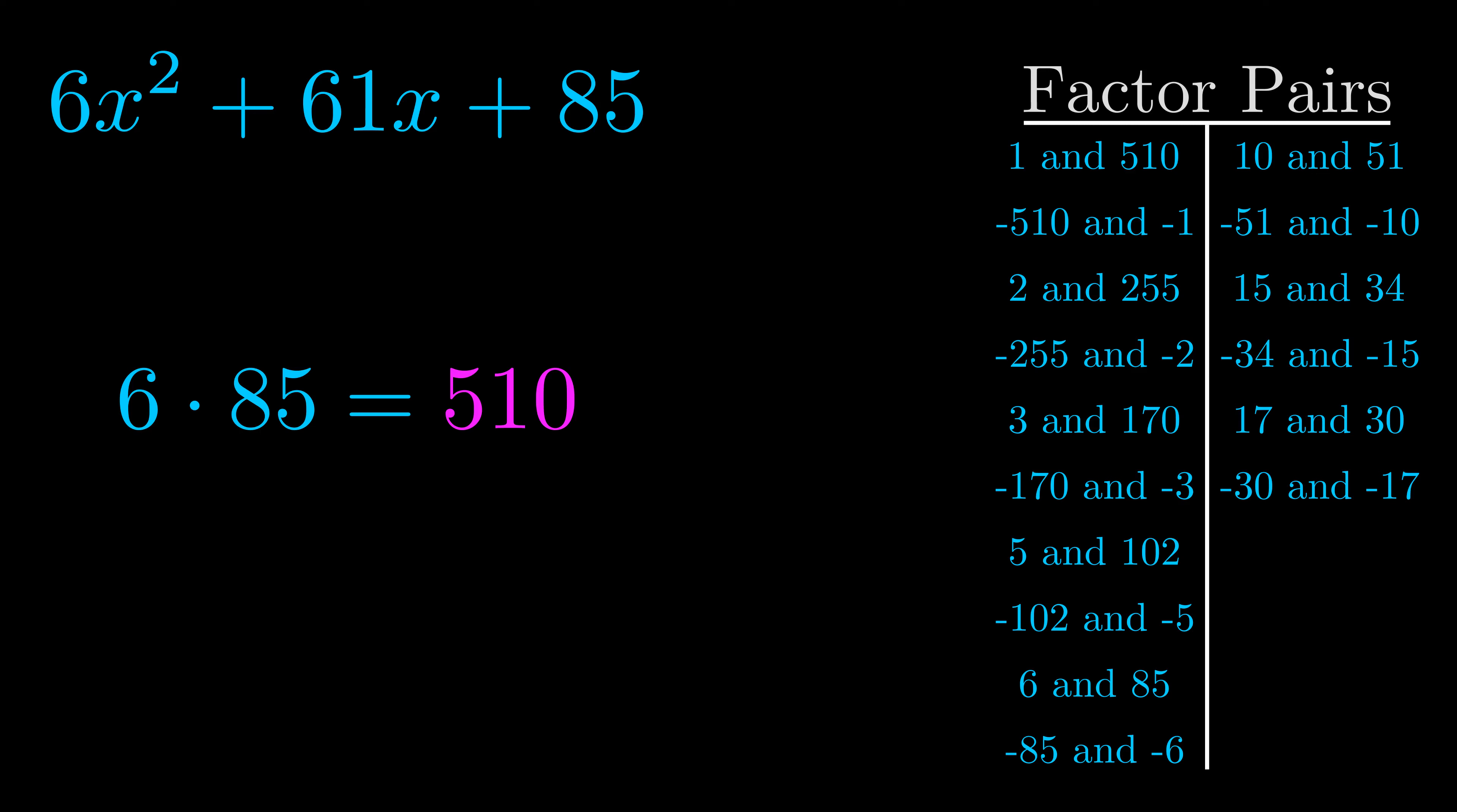The b value is the coefficient on the x term. That's the middle term, the one that we haven't done anything with yet. And really this is the only factor pair that we need.